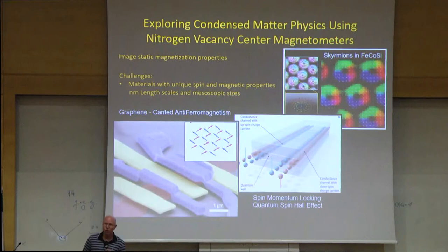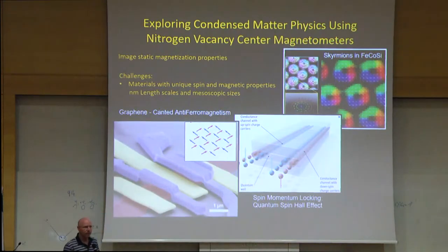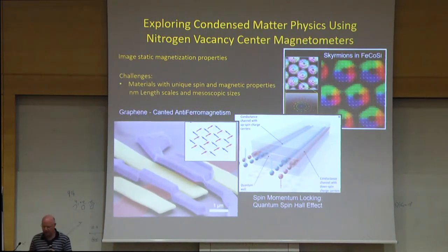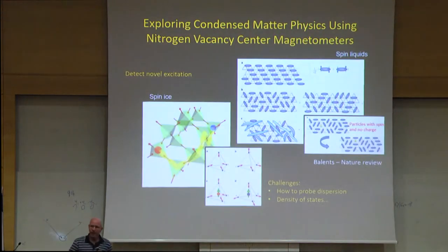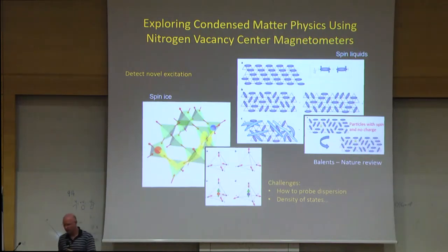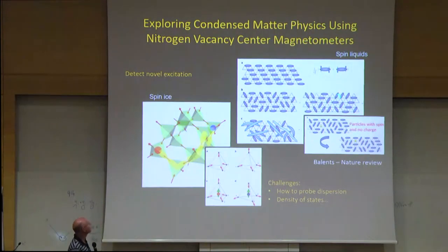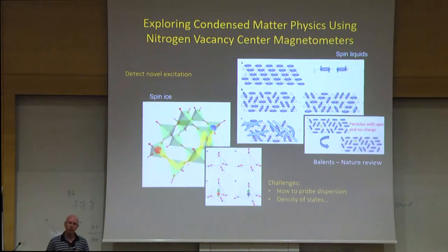Skyrmions also appear on challenging length scales — on the order of tens of nanometers up to 100 nanometers — again making conventional techniques not easy to apply. These were examples of ground states with no dynamics. But some systems have really interesting excitations, so their behavior above their ground state is also extremely interesting.